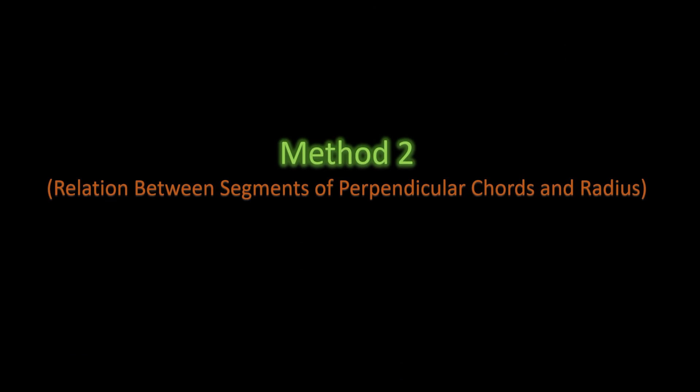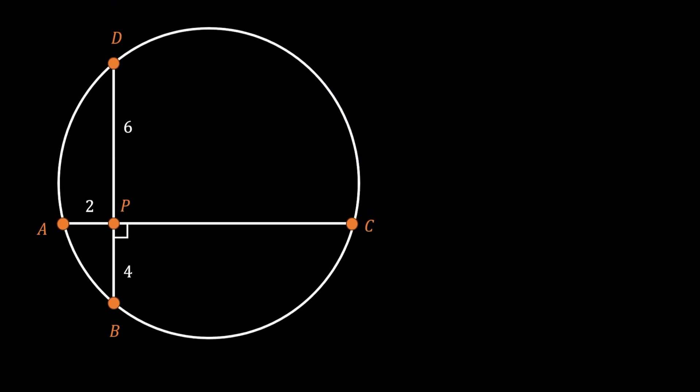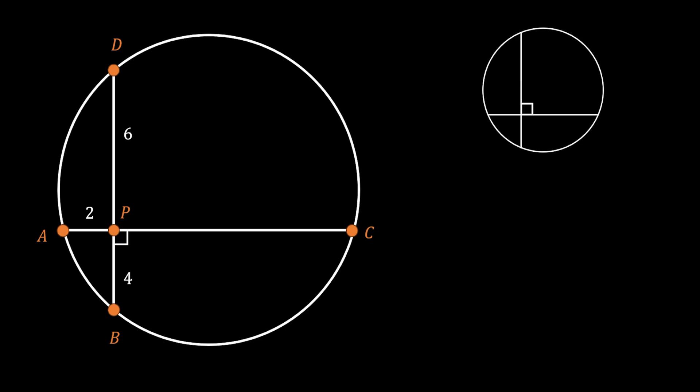Now let's do our second method — the correlation between the segments of perpendicular chords and the radius. This is by far the easiest method. If we have a circle with two perpendicular chords and set the values of the segments as A, B, C, and D, there is one formula that says 4 times R² equals the sum of the squares of all of these segments. I didn't know about this formula until a couple months ago, and it's amazing how easy it makes solving problems like this.